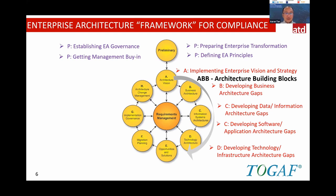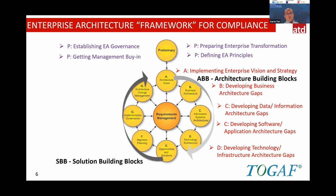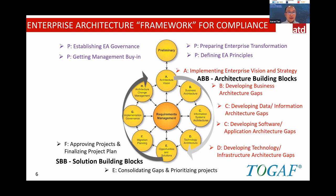Many IT people are comfortable in phases C and D — talking about data, applications, and technology — but they are afraid to work in A and B, which covers enterprise vision, strategy, and business architecture. Without A and B, whatever you deliver in C and D has little value because senior management only sees value in vision, strategy, and business architecture. Once those are done, we develop a solution — consolidating all gaps into transformation projects, assigning teams, setting timelines, with architects supervising compliance.